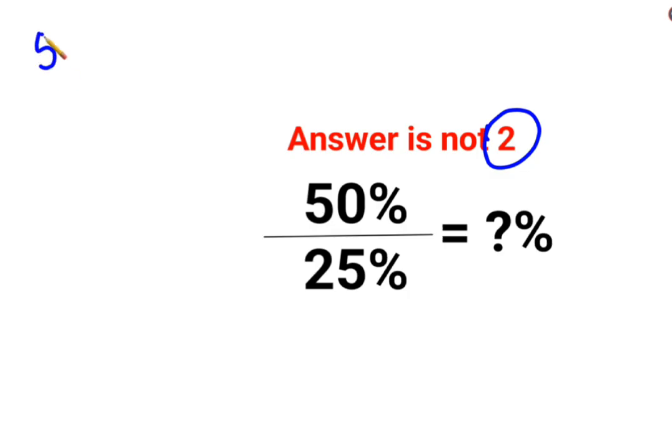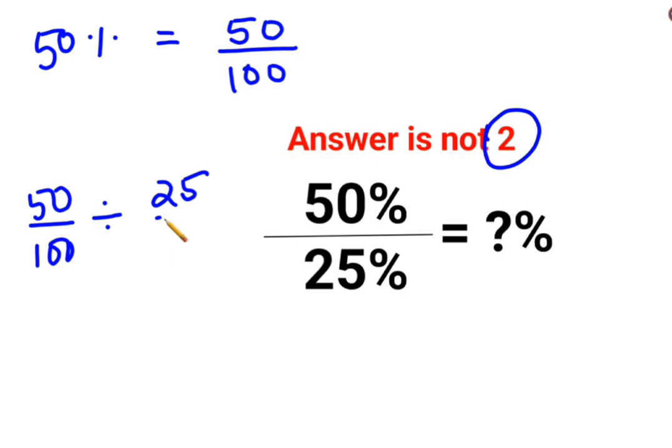First thing, when you have 50%, you need to convert it into a number or fraction, that is basically 50 upon 100. So basically your question is 50 upon 100 divided by 25 upon 100.